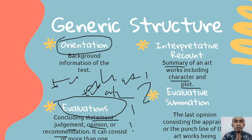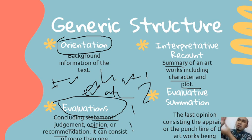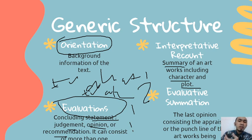But remember, if you write multiple evaluations, don't be redundant. If you already stated something in the first evaluation, find another angle for the next one. For example, if you said something good in the first evaluation, you can mention something less favorable in the next one — but not harshly critical.